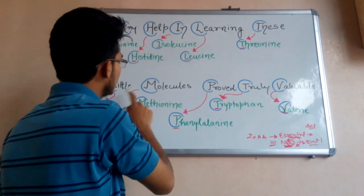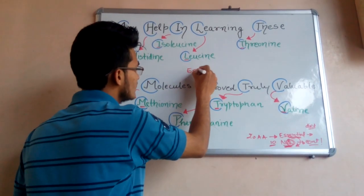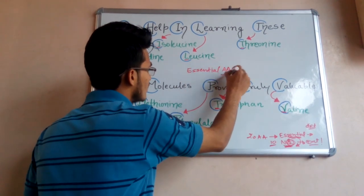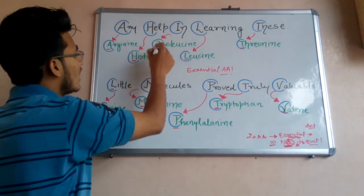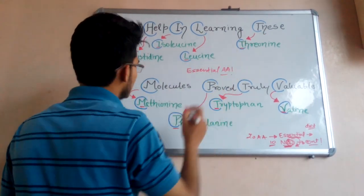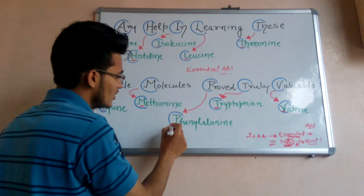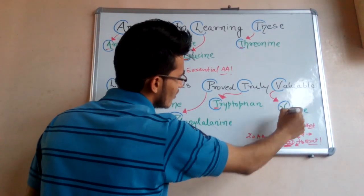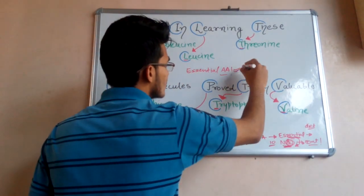These 10 are the essential amino acids. So here A means arginine, H means histidine, I means isoleucine, L means leucine, T means threonine, L means lysine, M means methionine, P means phenylalanine, T means tryptophan, and V means valine. So these 10 are the essential amino acids. For example, if in a